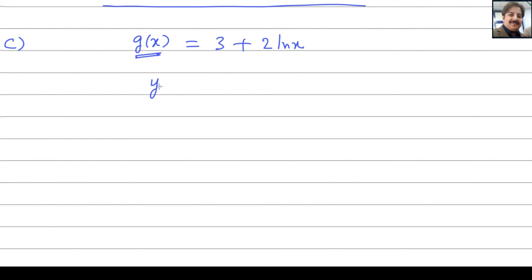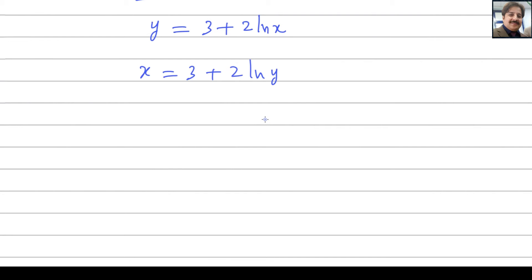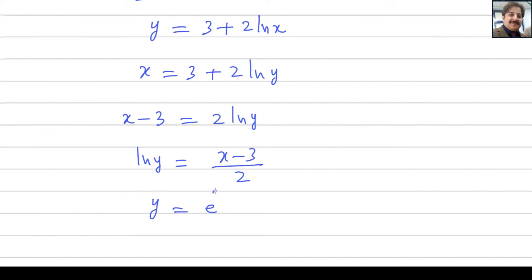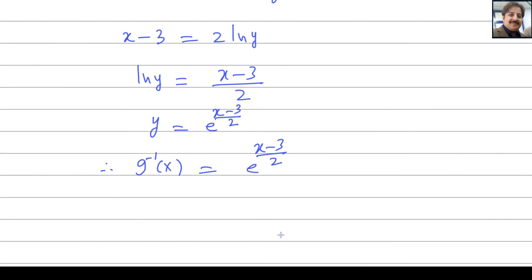To find the inverse: first, replace g of x with y, so y equals 3 plus 2 log x. Next, interchange the variables x and y, giving x equals 3 plus 2 log y. Then make y the subject: bring 3 to the left to get x minus 3 equals 2 log y, so log y equals x minus 3 divided by 2. To get rid of log, take the exponent of both sides. Therefore, g inverse of x equals e to the power of x minus 3 divided by 2.